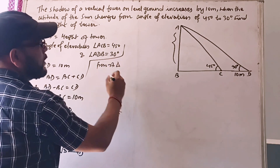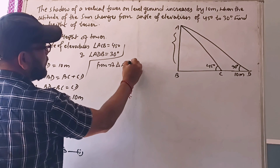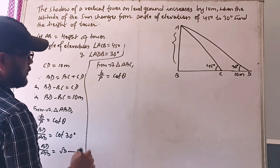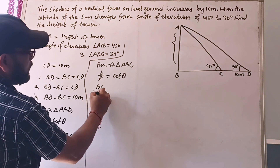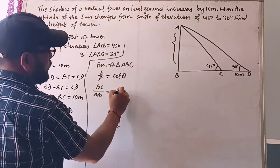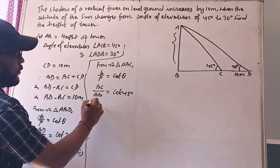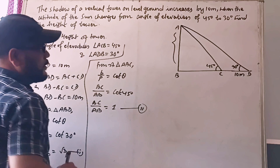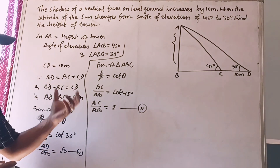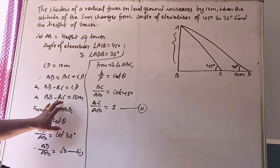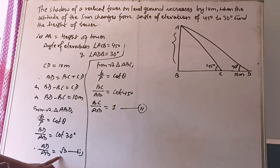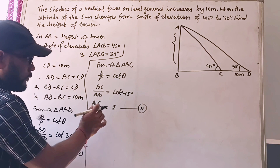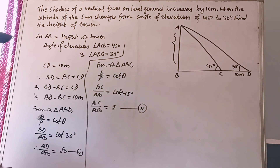Now from right angle triangle ABC, base upon perpendicular equals cot theta, so BC upon AB equals cot 45 degrees, which equals 1. So this is the second relation. We have found BD/AB = √3 and BC/AB = 1.